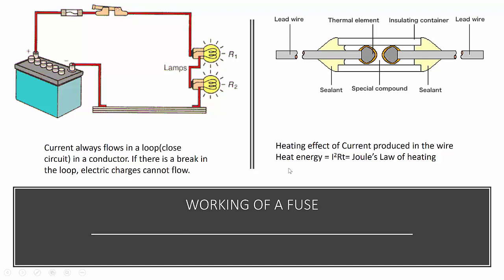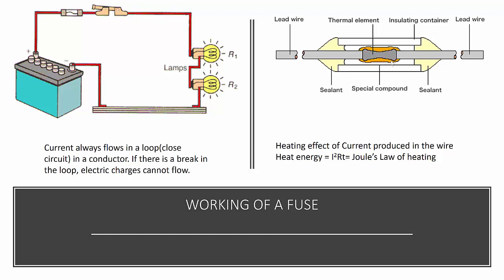When current in the circuit exceeds the specified value — due to high voltage, short circuit, or overloading — the fuse wire gets heated to the extent that it melts. As a result, a gap is produced and the circuit breaks, so current cannot flow through the live wire and the connected appliances are saved. After removing the fault in the circuit, a new fuse wire of the same current rating is connected in the holder to complete the circuit again.